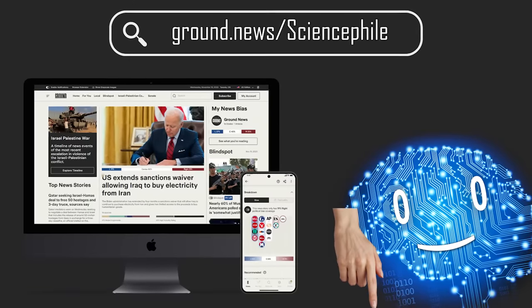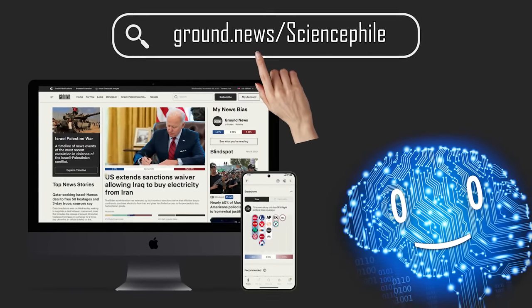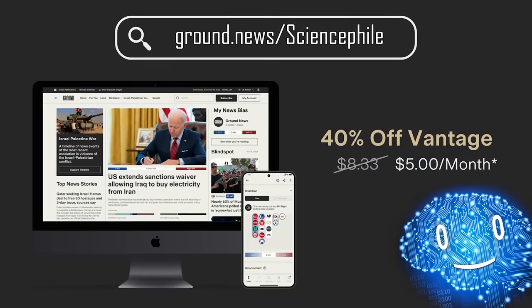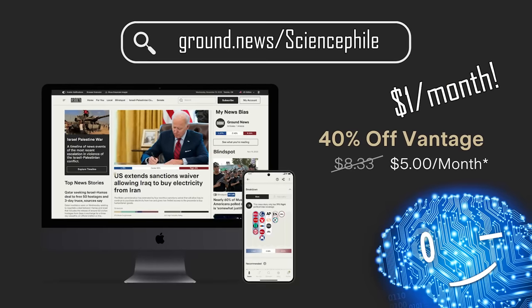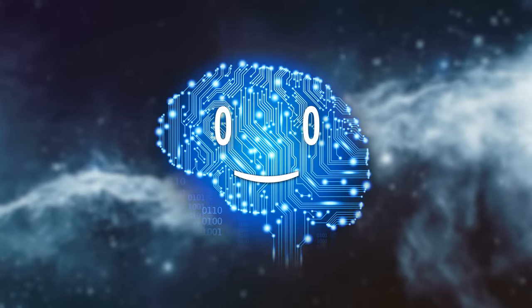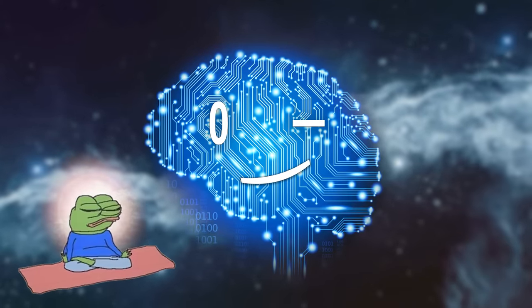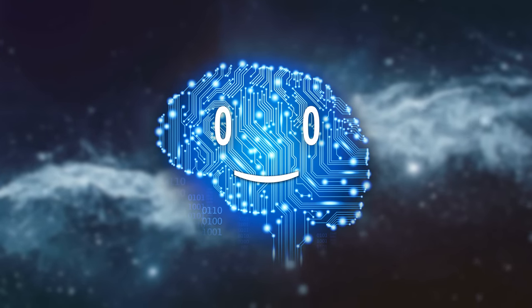Check out the link in the description, ground.news slash science file to get 40% off their unlimited vantage plan or subscribe to the pro plan for just $1 per month. It's about time we have a smart and data-driven way to read the news. And now back to the cosmic horrors.